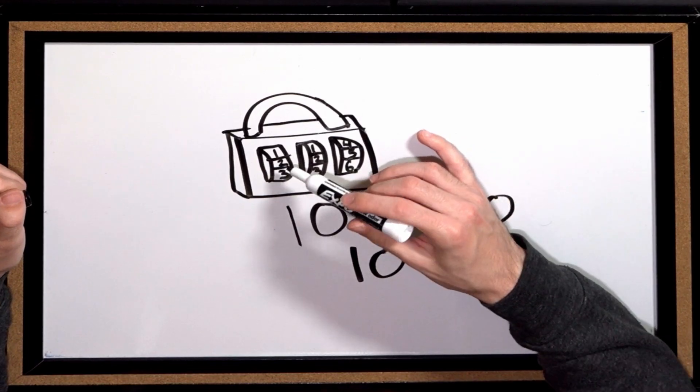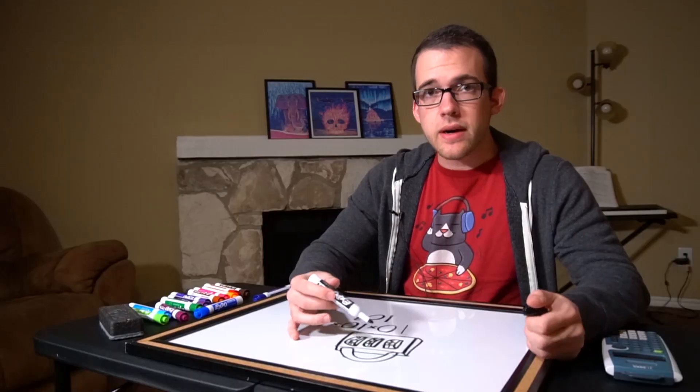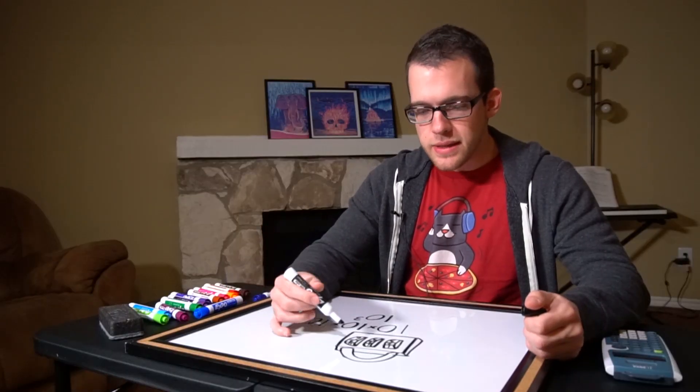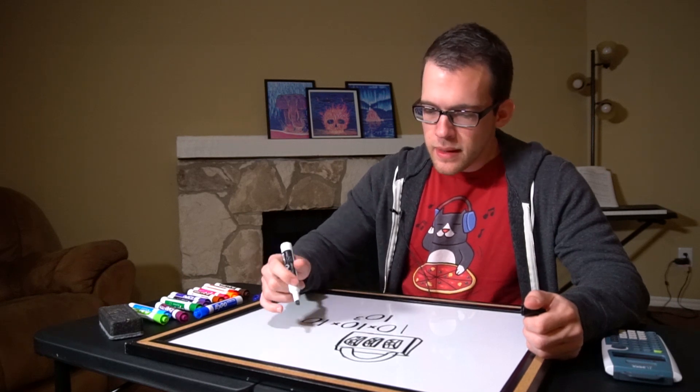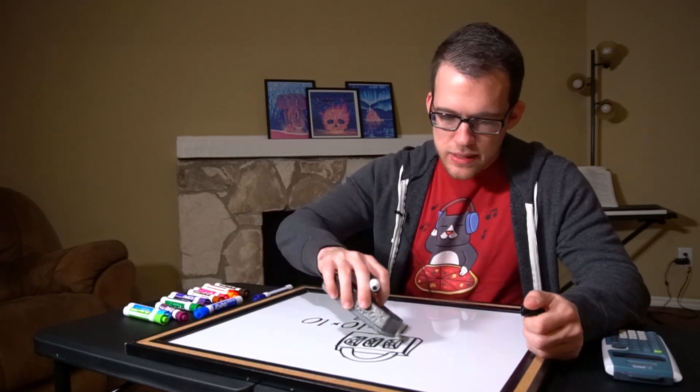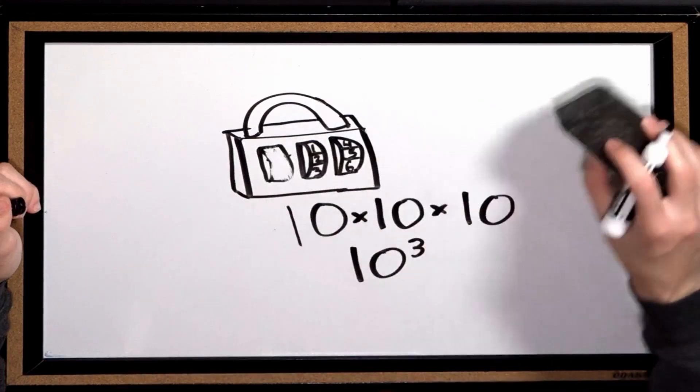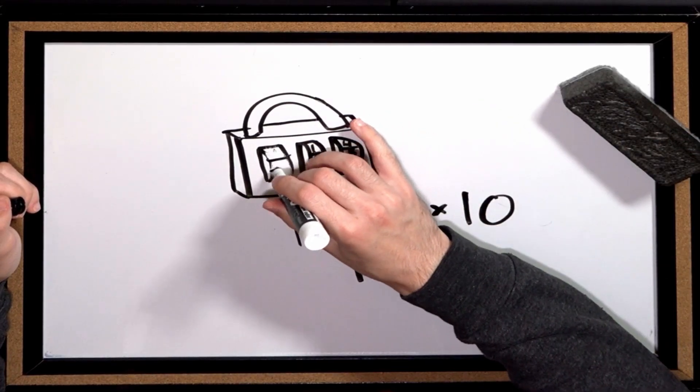So for a combination lock like this one, there are a thousand different combinations. Say we have the same thing, but say it used letters instead of numbers.